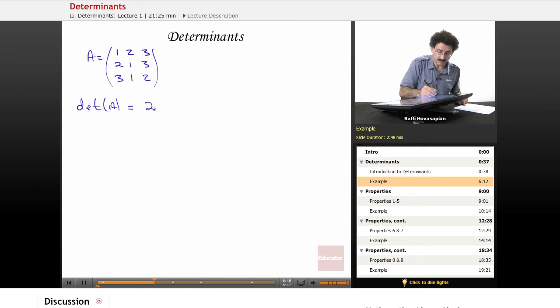1 times 1 times 2 is 2. Okay, plus 2 times 3 times 3. 2 times 3 is 6. 6 times 3 is 18. Plus 3 times 2 times 1, 6. Okay, now, minus 1 times 3 times 1 is 3. Minus 2 times 2 times 2. 2 times 2 is 4, times 2 is 8. Close this 8 off. Minus 3 times 1 times 3. Minus 9.